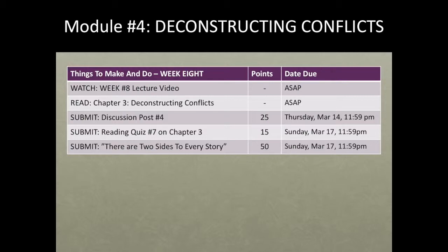Three things we'll be doing this week. First is discussion post number four, due on Thursday, March 14th, worth 25 points. I'm essentially asking you to respond to two case studies in the book. Also, reading quiz number seven on Chapter 3, worth 15 points, due Sunday March 17th at midnight. And the big one: 'Two Sides to Every Story,' worth 50 points, also due Sunday March 17th. Pick a conflict you know of or were involved in and break it down using the tools from Chapter 3. If you do the reading, watch the video, and participate in the post, you should be well qualified to get it all done.